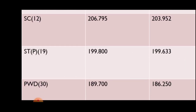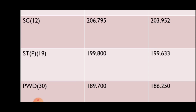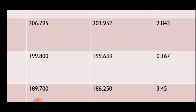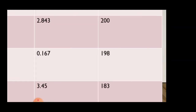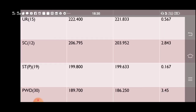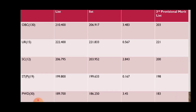The first provisional merit list is 189.700 and the second provisional merit list is 186.250, so the difference is 3.45. The first provisional merit list is 189.800 and the second provisional merit list is 186.800, giving a difference of 3.45. So the expected cutoff is 183.800.